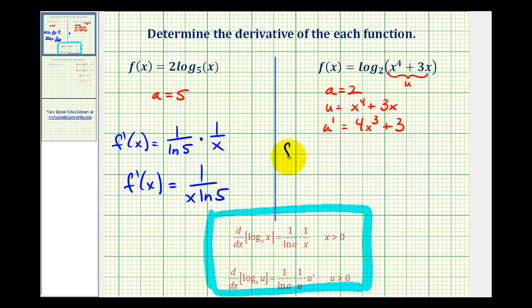So f prime of x equals, our numerator would be 4x to the 3rd plus 3, and our denominator would be the quantity x to the fourth plus three x times natural log two. So we'll go ahead and stop here.